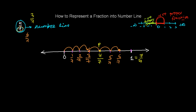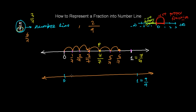Now what if I have 2 over 9? The process is exactly the same, but the sections will be 9 instead of 7. Mark 0 and 1, then divide into 9 equal sections: 1, 2, 3, 4, 5, 6, 7, 8, and 9. We now have 9 equal sections. If the question says represent 2 over 9, count 1, 2 — this point P is 2 out of 9, or 2 by 9. This is the representation of 2 by 9 on the number line.